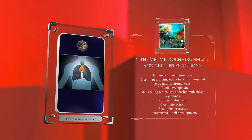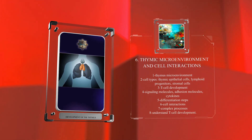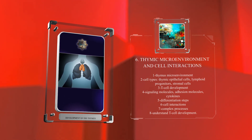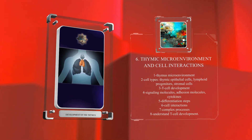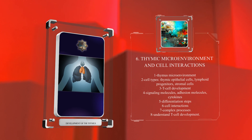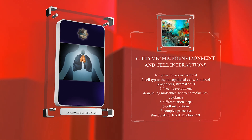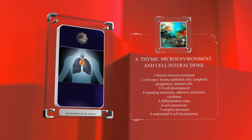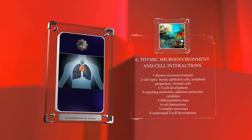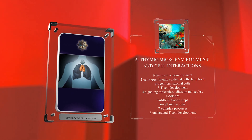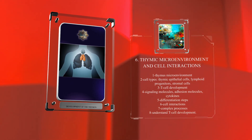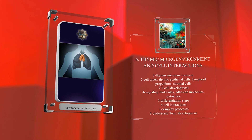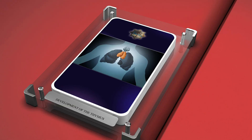These cells interact through various signaling molecules, adhesion molecules, and cytokines. T-cell development involves a series of differentiation steps for lymphoid progenitors under the influence of thymic epithelial cells and stromal cells. Exploring the thymus microenvironment and cell interactions helps us understand the complex processes behind T-cell development.